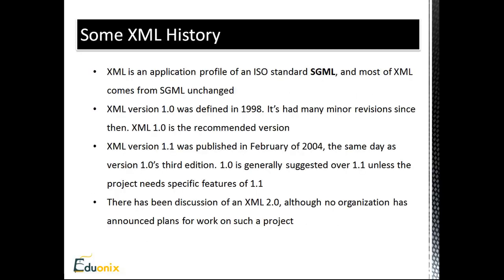XML is an application profile of the ISO standard SGML, which HTML also derived from. XML version 1.0 was defined in 1998 and has had many revisions since. XML version 1.1 was released in 2004, but 1.0 is the standard that most people use unless they have a specific need for 1.1, which usually has to do with character sets or foreign languages. There has been discussion of XML 2.0, although no organization has announced plans for it.